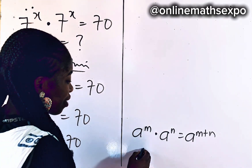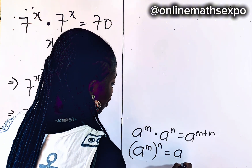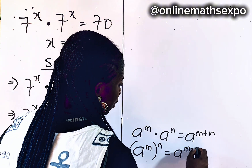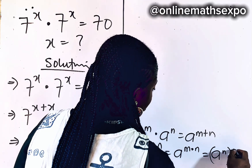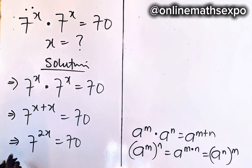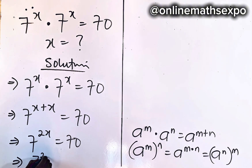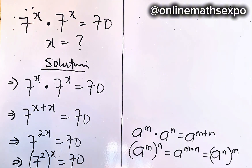Also remember, for every a to the power of m, raised to the power of n, it is a to the power of m multiplied by n, which is also a to the power of n raised to the power of m. So let's apply it here — this is the same as 7 squared raised to the power of x, which expands back to give us 2x. And this is equal to 70.